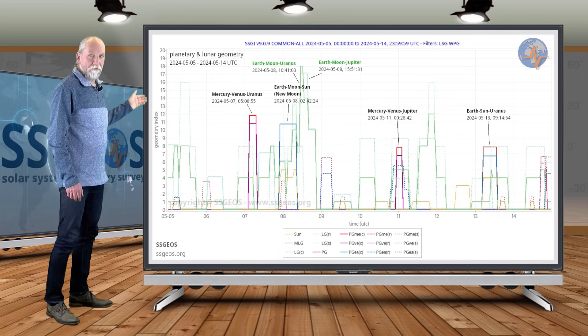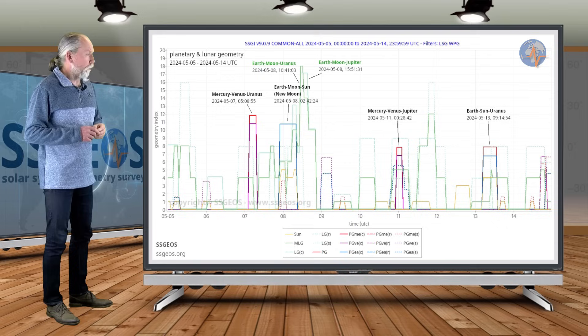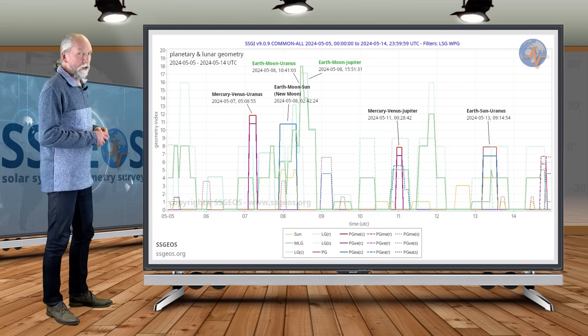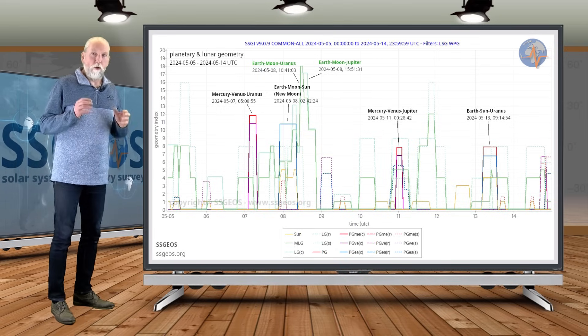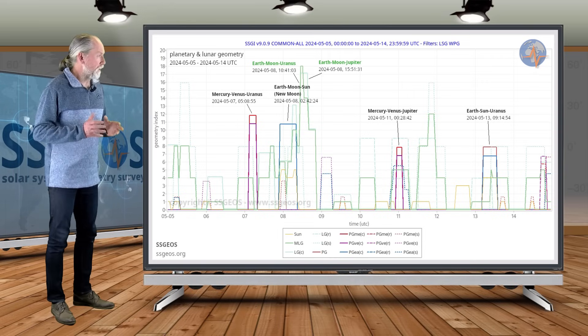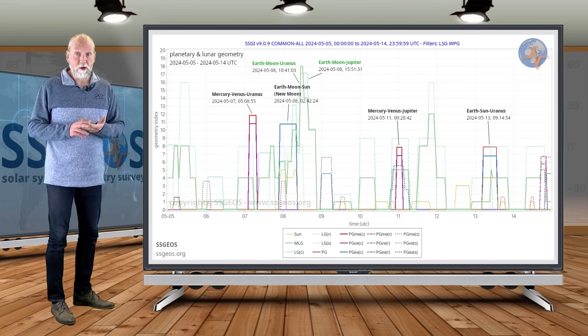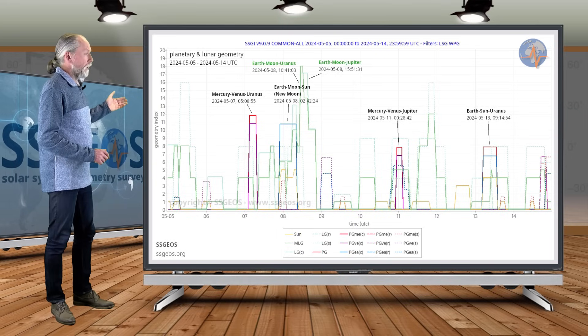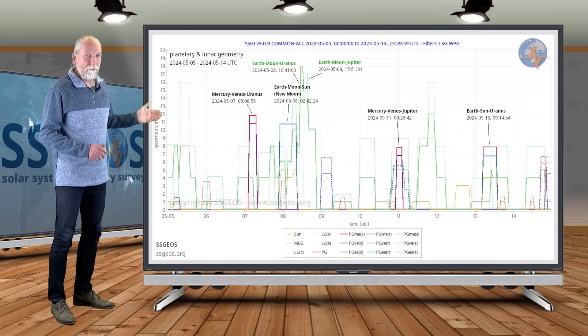So as you can see, we have on 7 and 8 May some clustering of conjunctions, also a new moon that happens early on 8 May. The combination here can result in some stronger seismic activity. We have three or four conjunctions—three lunar conjunctions and a planetary conjunction.